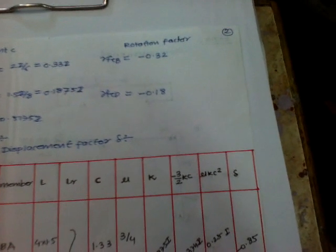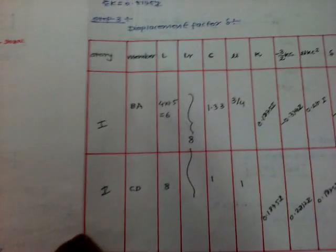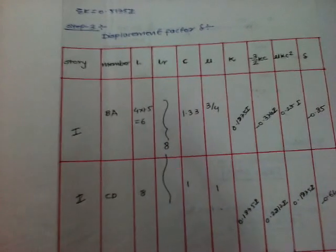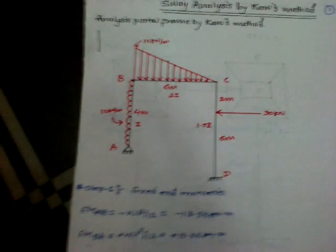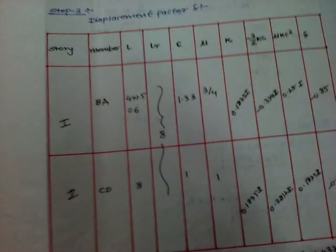Here this is our first story, so we are considering here one only. We are on displacement factor. At that time in displacement we are considering only column members. So here column member is which? BA and CD. So we are considering column members as BA and CD.